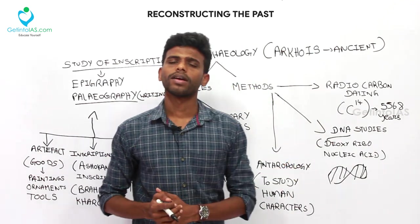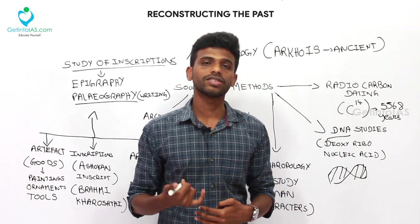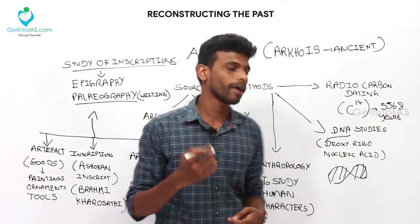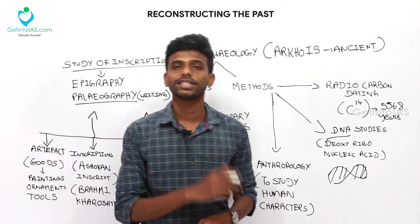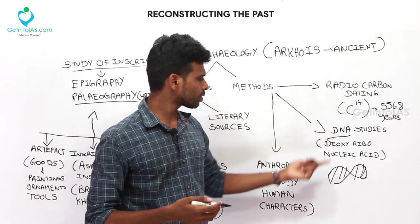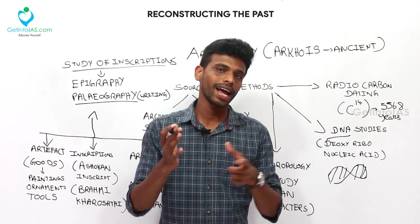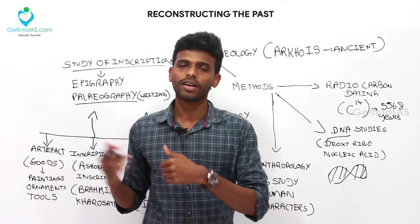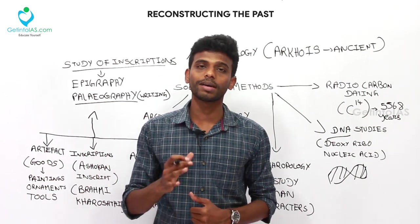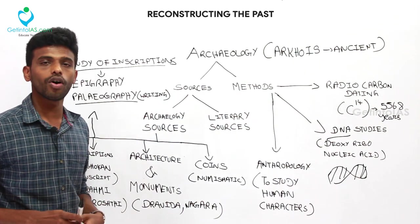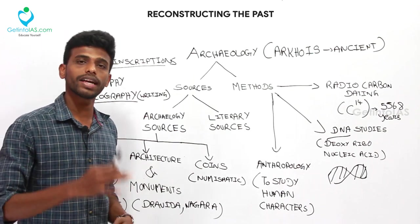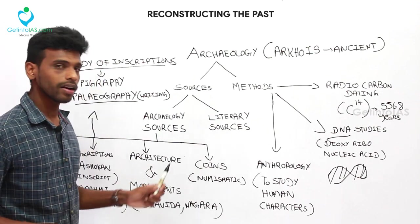The next important method is anthropology. While DNA studies reveal inner physical and genetical traits, the outer physical traits and physical characteristics of ancient humans are determined by anthropology. Anthropology is a branch of science which deals with ancient human characters. The main source for all these methods is the fossils left over by our ancestors. Now, coming to the sources — sources play an important role in archaeology and are referred to as evidences by archaeologists.